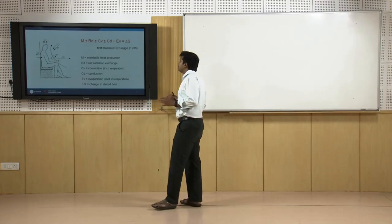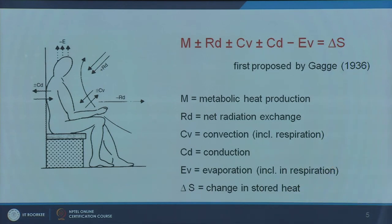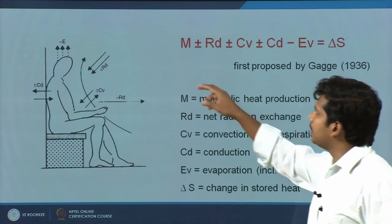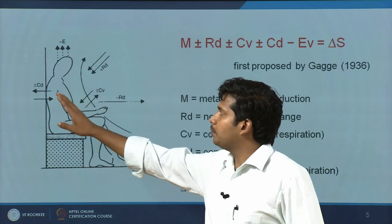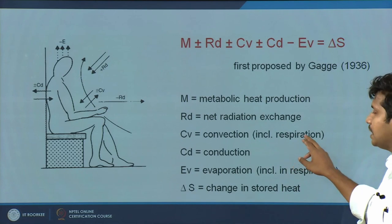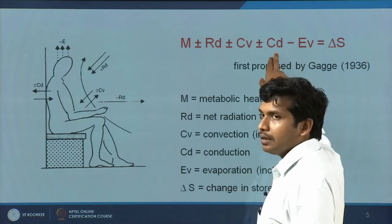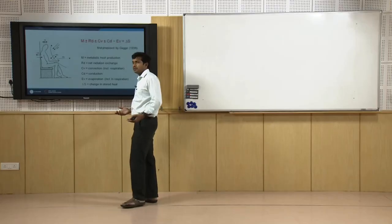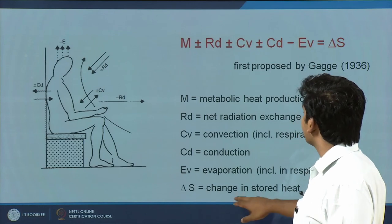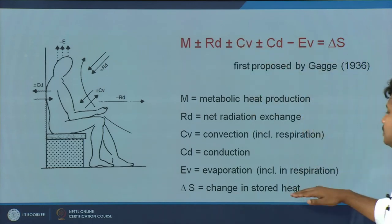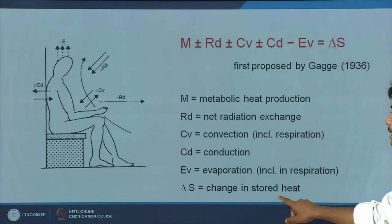This is the metabolic heat balance equation — a quite old derivation which is generally accepted as a broad outline for understanding how heat exchanges happen. There are different terms: first is the metabolic heat production. The next is net radiation exchange which happens between a person and the environment. Then you have convection exchange, which includes respiration — whatever you breathe, you are also losing or gaining heat. Then there is conduction exchange — you can gain or lose heat if you are in touch with a surface like the floor. Then you have evaporation, which again includes respiration. On the right-hand side you have the change in stored heat, delta S.